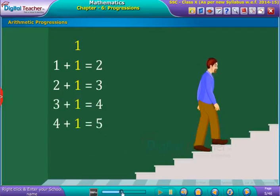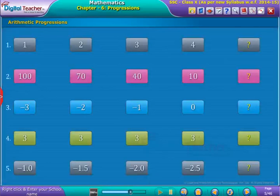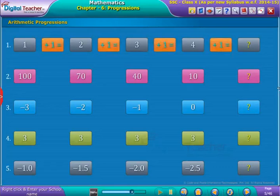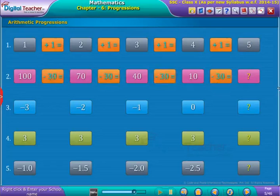Here there is a common difference. In the given first set of numbers, we notice that each term is increasing by one from the preceding term. In the second set of numbers, we observe that each term is decreased by 30 from the preceding term.